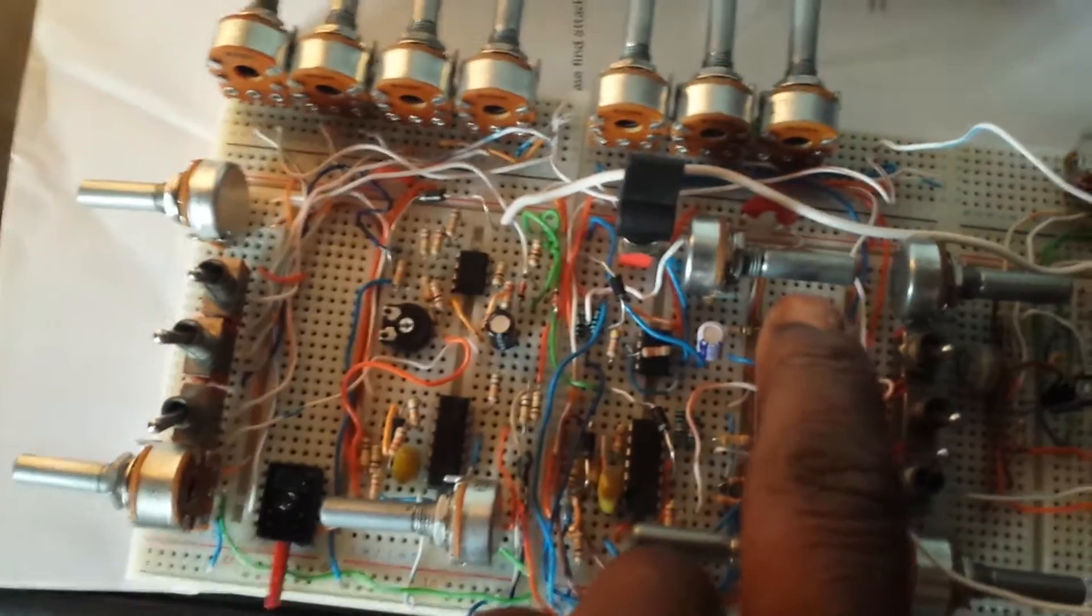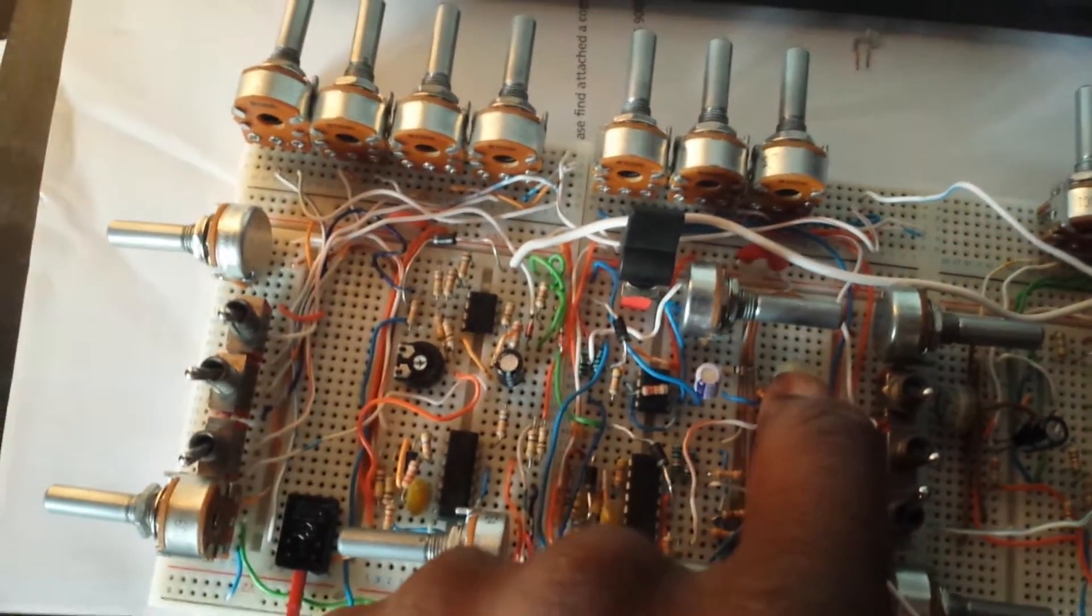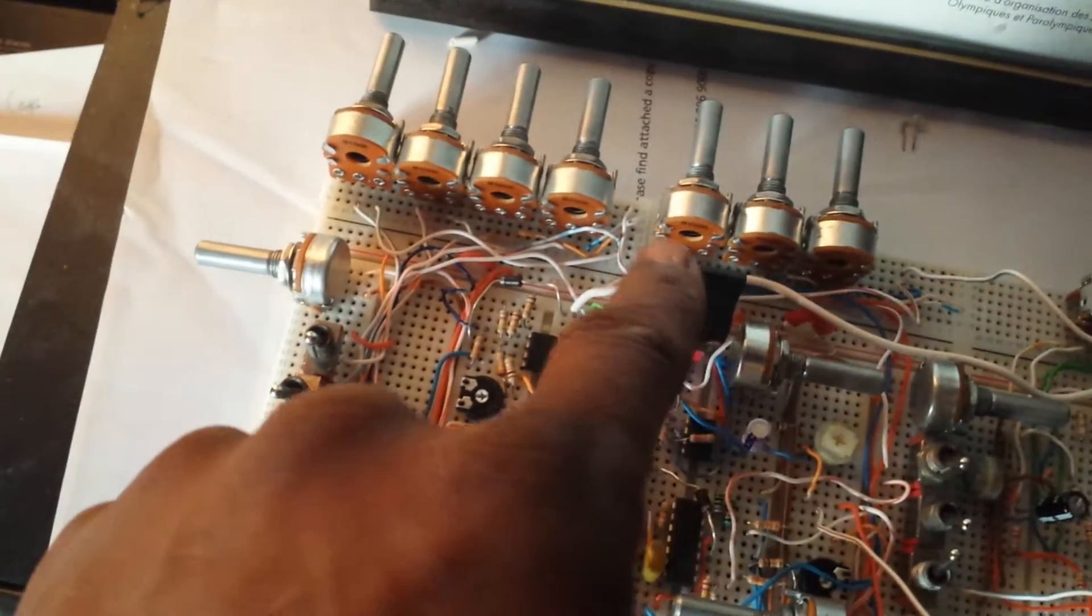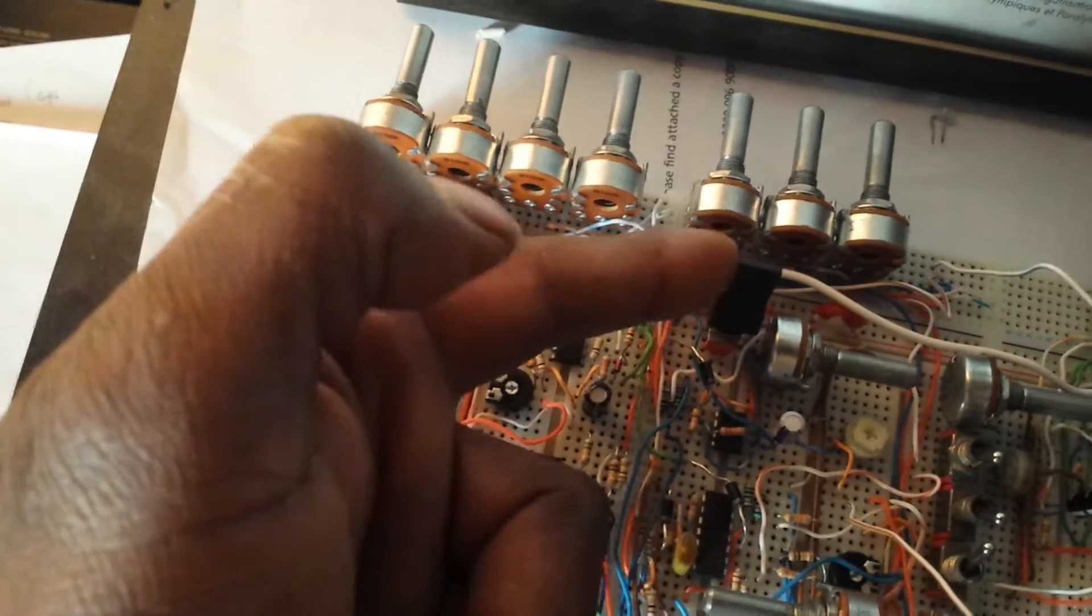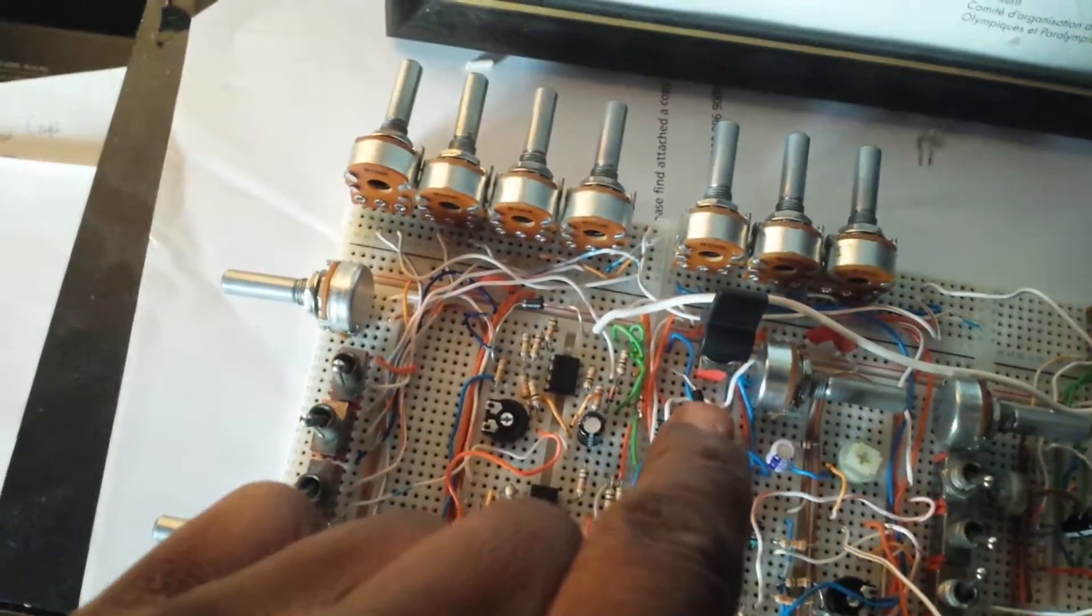LFO wave speed and we have the LFO shape because you can either have it a triangle or a square, and also got a switch where I can switch it so it turns to a sawtooth.